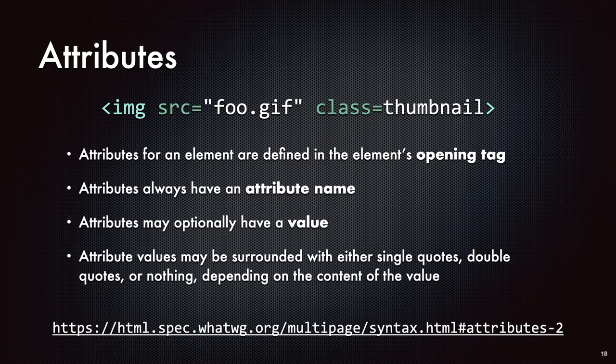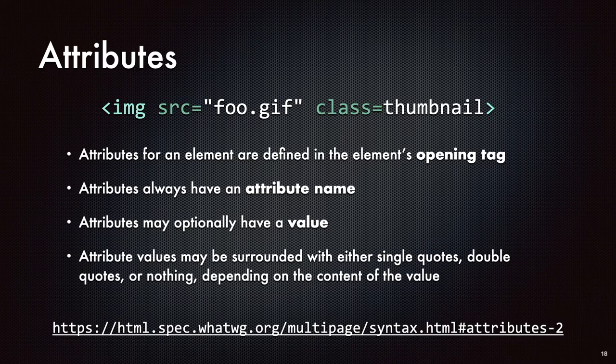Attributes always have a name. In the example of an image element, the opening tag is just IMG. You're going to end up with other pieces inside the opening image tag. You need to tell the browser where it's going to get this image, so there is an attribute called the source, abbreviated SRC. You'll have a less-than symbol, IMG, a space — all attributes are separated within the opening tag by spaces.